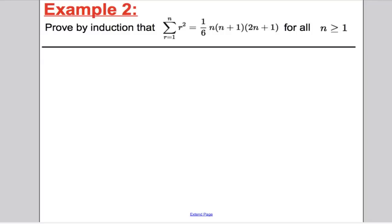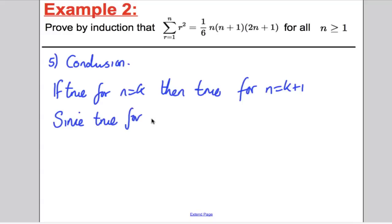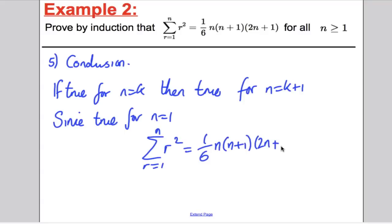We're on our last step now: the conclusion. Step 5: if true for n = k, then true for n = k+1. Since true for n = 1, we can state that the sum from r = 1 to n of r² is indeed (1/6)n(n+1)(2n+1) for all n ≥ 1. And that is a proof by induction in its entirety. It's quite a long process, but it must be written out neatly as such.